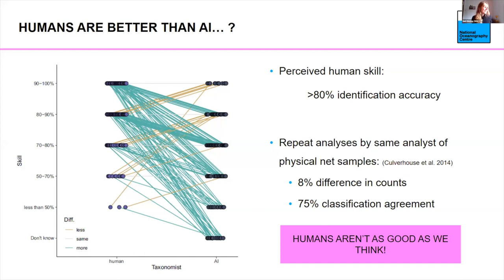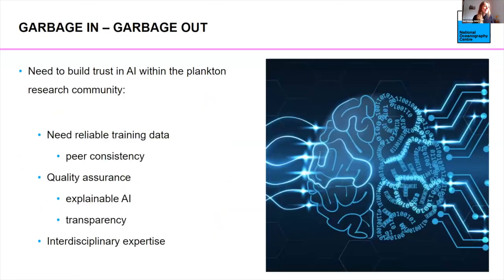So we humans really aren't as good as we think. When we asked people to compare how good a human is versus an AI, the predominant response was that humans believe they are better than AI. Which I just showed you — they're really not as good as we think. Only a few optimistic researchers thought AI might be better than humans. So the summary is that even though AI is a really promising tool, at the moment we don't have community trust in using it.